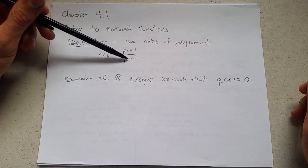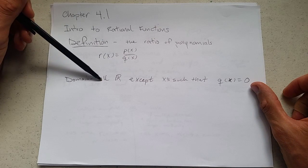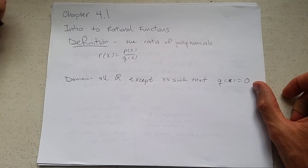So it's going to be all real numbers except the ones that make q of x equal to zero. All real numbers except x's such that q of x would be zero.